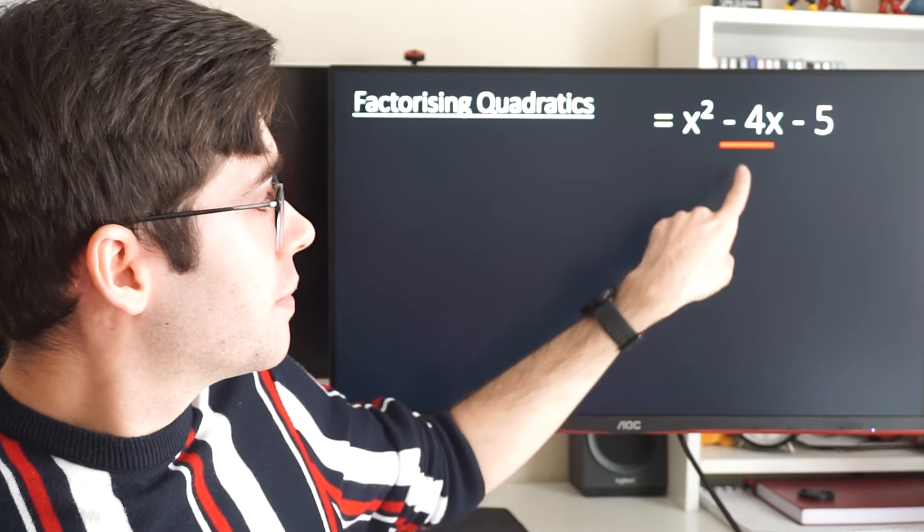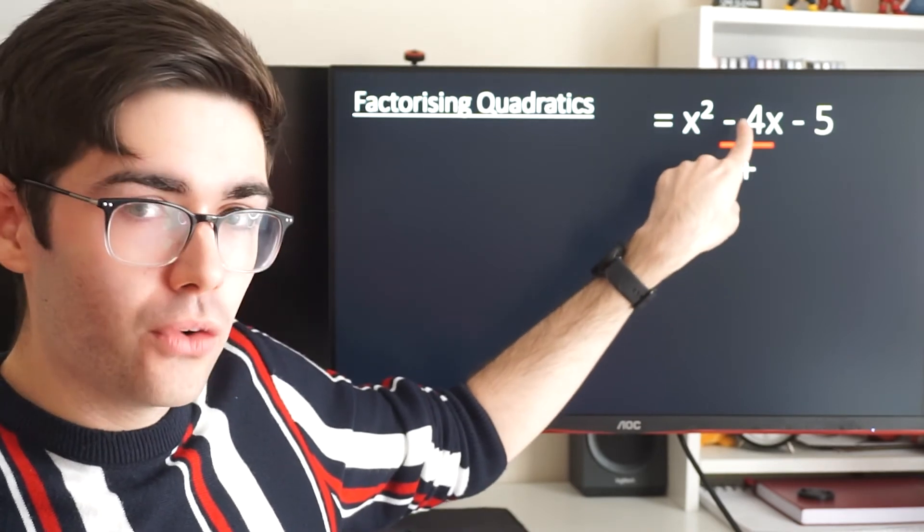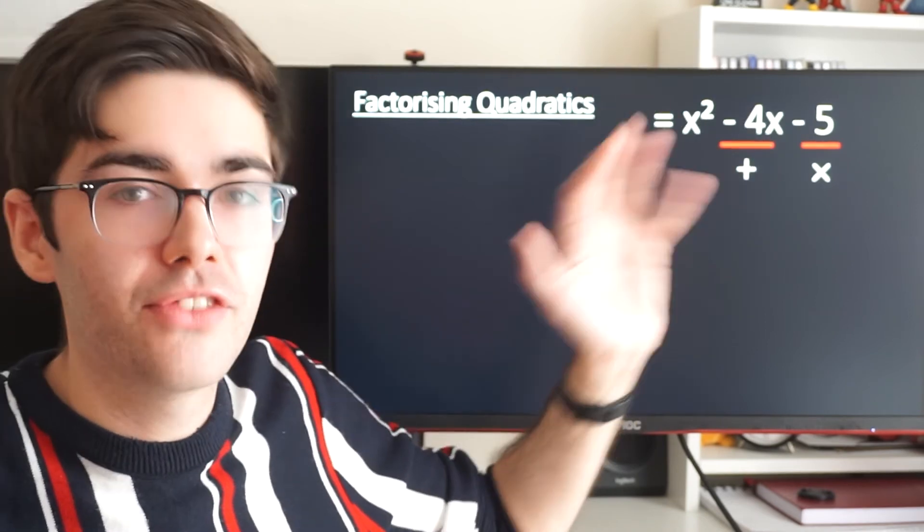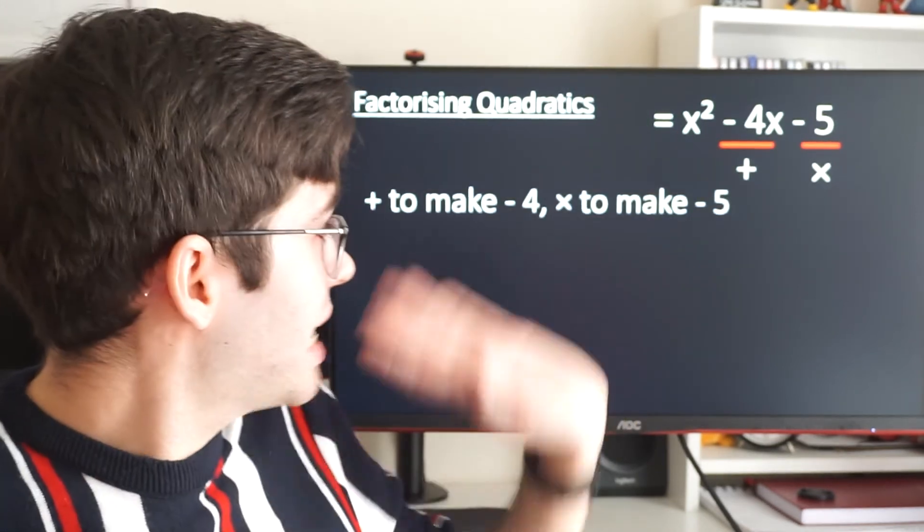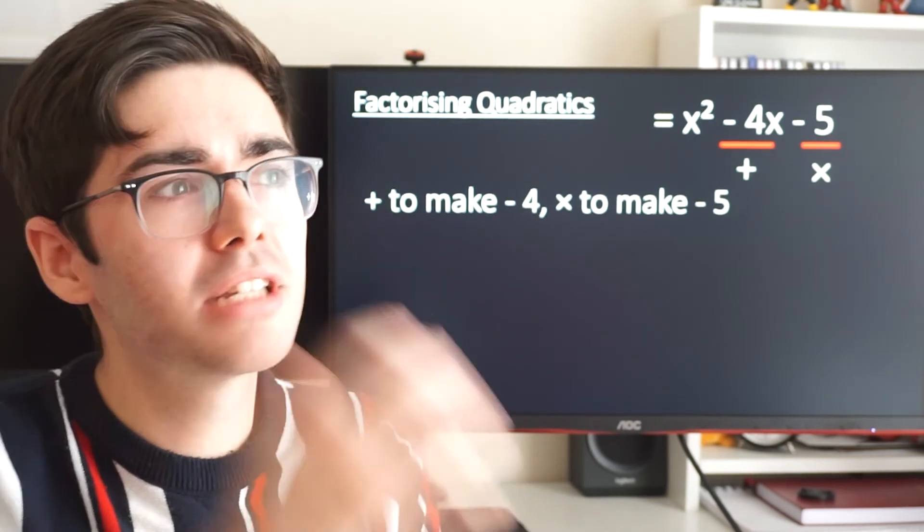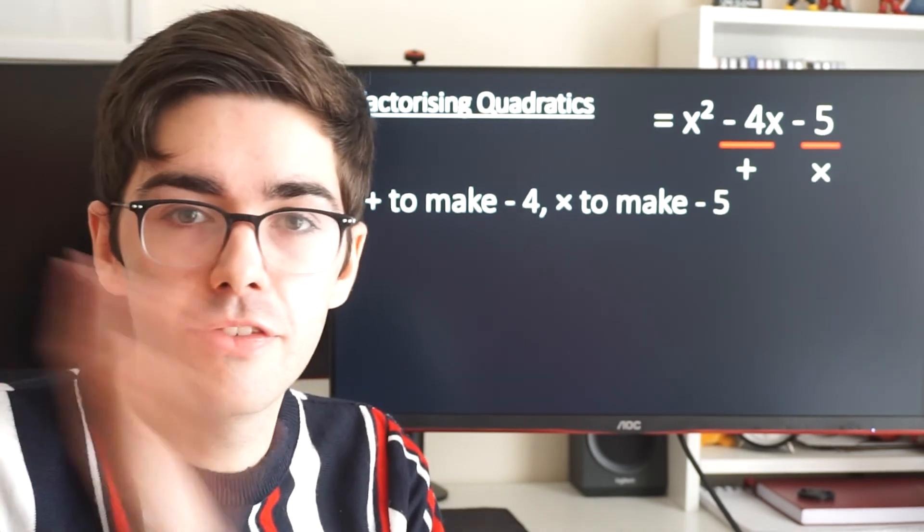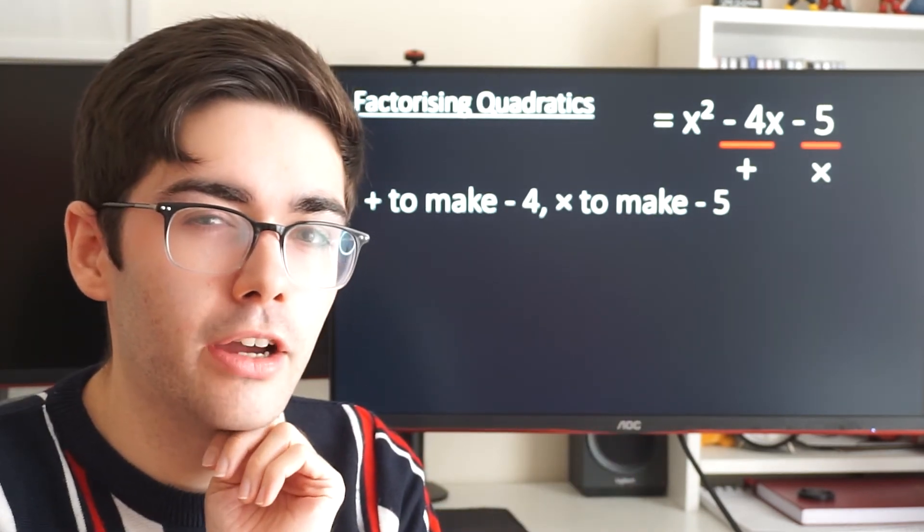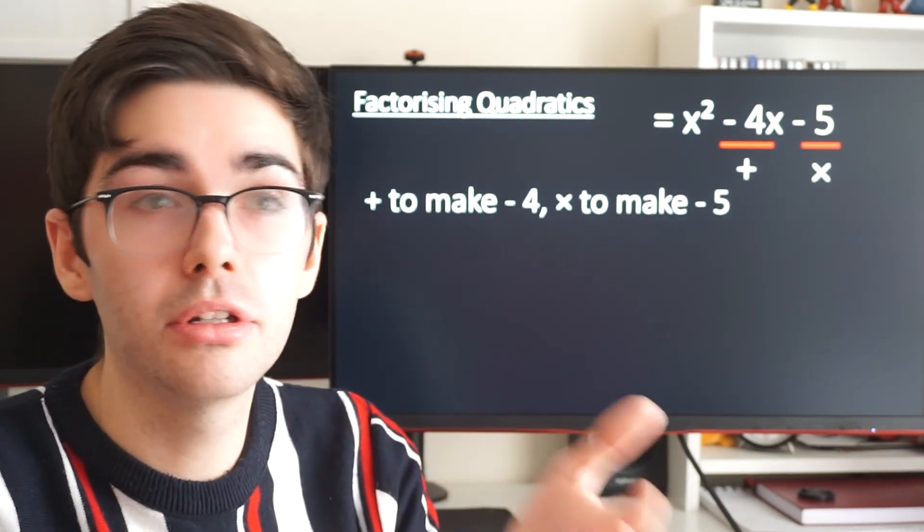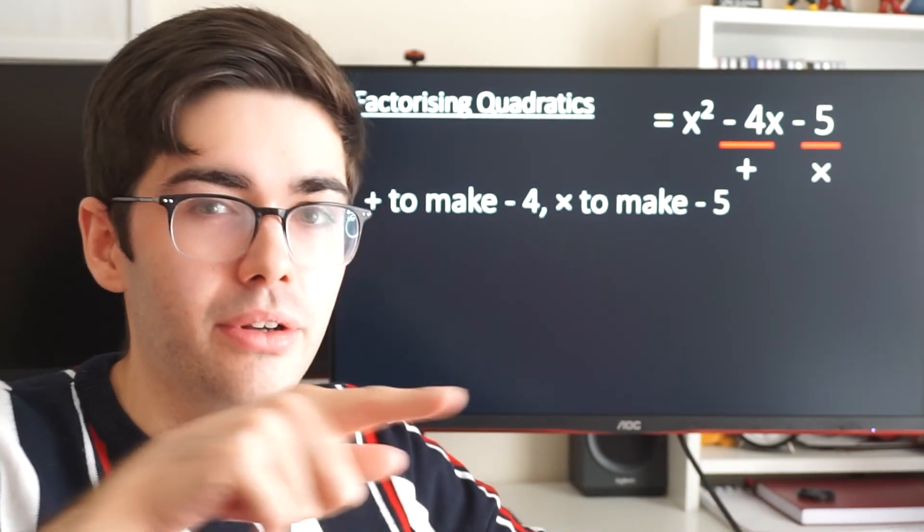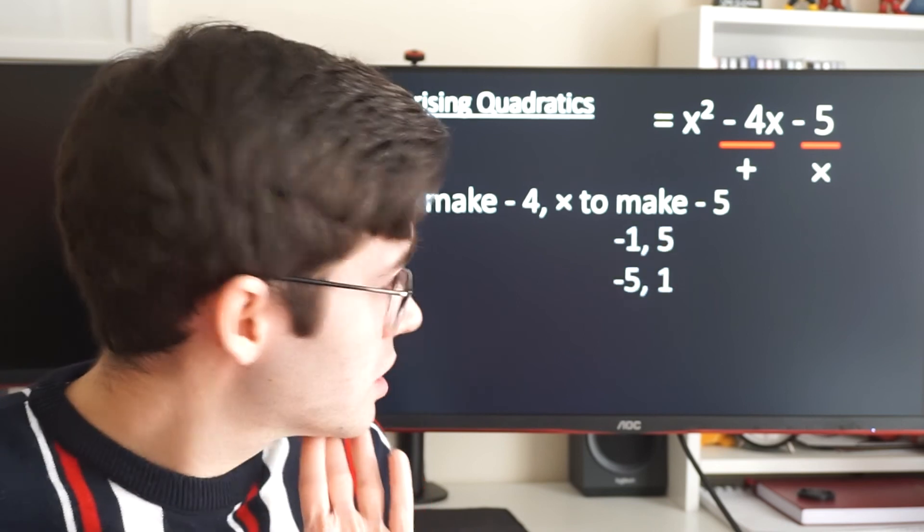Again, I'm looking for two numbers that add to make minus 4 and that times to make minus 5. Remember, these minuses are part of that number. So they need to add to make minus 4 and times to make minus 5. I'm not going to list all the numbers that add to make minus 4 because I could be here forever. I'm going to think about this. What times is to make minus 5? I could say 1 times minus 5 or the opposite of that: minus 1 times 5. So those are my options.